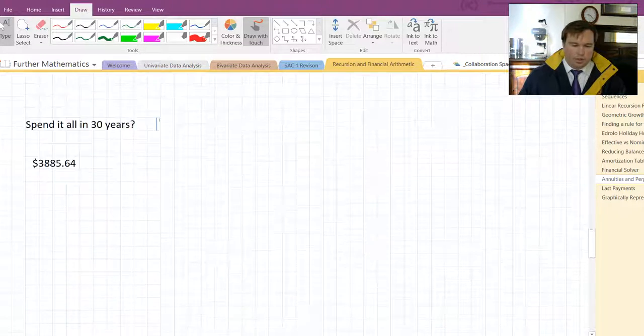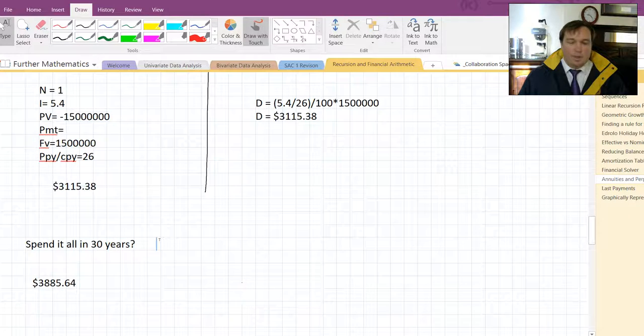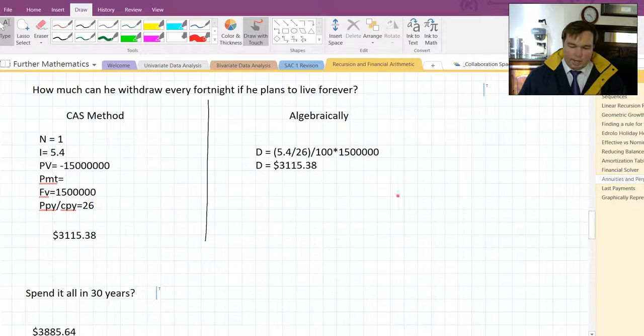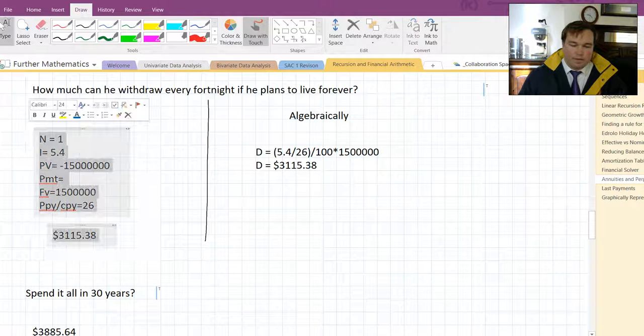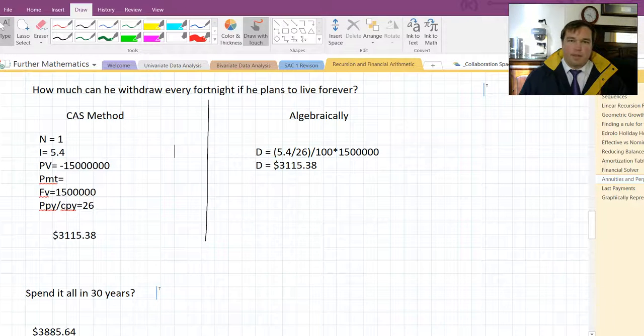And that's all I want to go through on annuities and perpetuities. But it's important you can do this algebraically for perpetuities, and that you can use Solver for both scenarios. Alright, thank you very much.